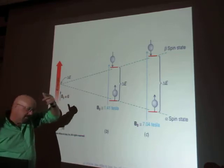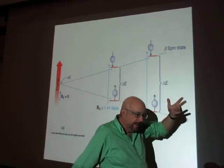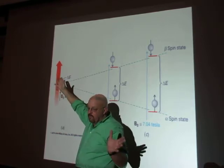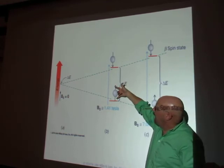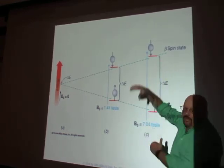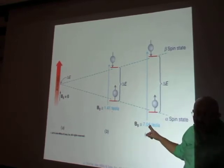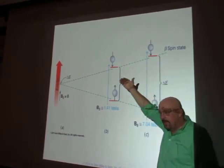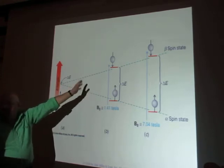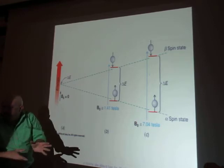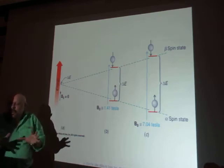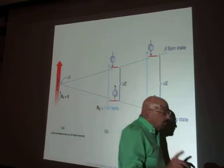Those two spin states — whether you're aligned with the magnetic field or against it — are different energies. In the absence of a magnetic field they are the same energy, but in the magnetic field, being aligned with it is lower energy and being against it is higher energy. The stronger the magnet you have, the bigger this energy difference. Here is a 1.4 tesla magnet versus a 7 tesla magnet — the larger magnet gives a bigger energy difference between the spin states. If we take spectra on different instruments, we have a way to fix that so the peaks appear at the same place on every instrument.